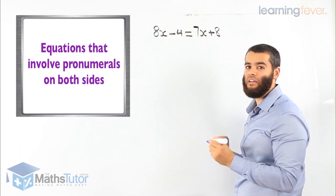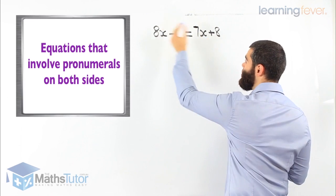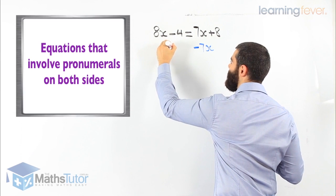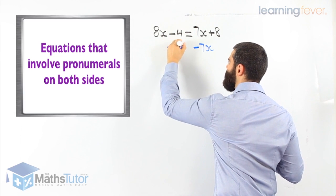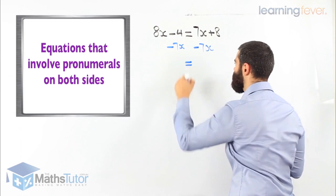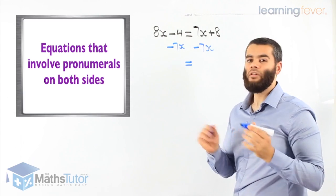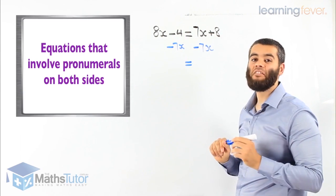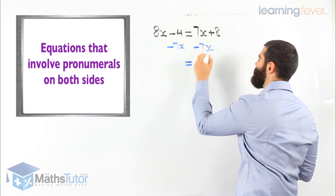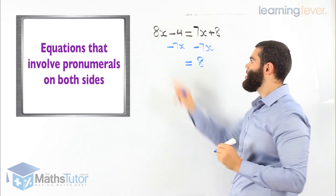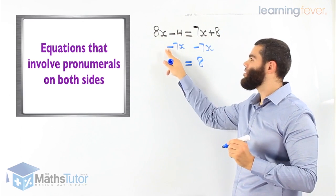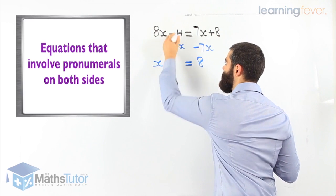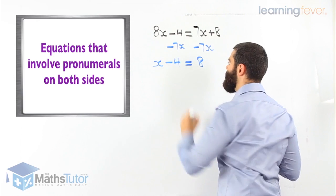7x is a positive 7x, so we want to move it to the other side — we're basically taking away 7x, and we take away 7x from both sides. Now, 7x take away 7x is gone, we're left with 8. And 8x take away 7x, we're left with 1x minus 4.